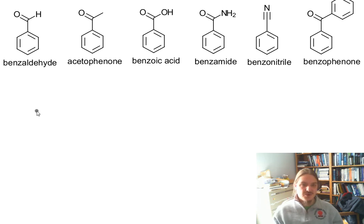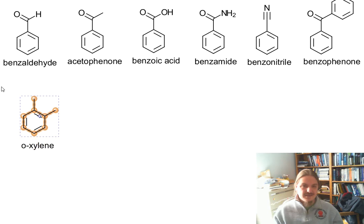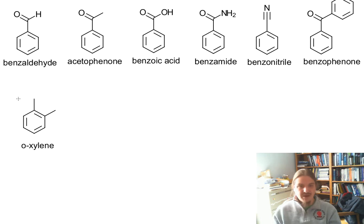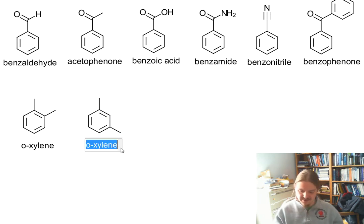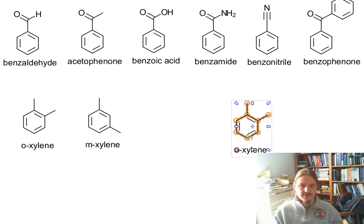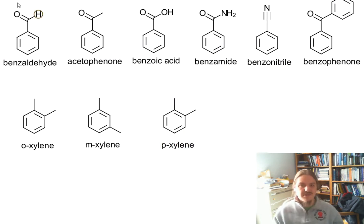In addition, it's worth noting that there are some di-substituted benzenes that have specific names. For example, the di-methylbenzenes are named as xylenes. And so you can have ortho-xylene, meta-xylene, and para-xylene.